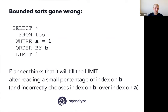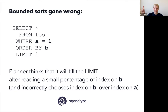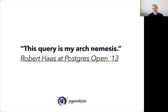There's also a special case of bounded sorts gone wrong. You have a filter clause a=1 and an ORDER BY b with LIMIT 1. If there are separate indexes on a and on b, the Postgres planner might actually choose to use the index on b — thinking it's easier to just get one row from b — while underestimating how long it takes to actually find a row where a=1. You get a really bad performing plan because of that index choice. Robert Haas has stated that this type of query is his arch nemesis because he's seen it so often in production databases.